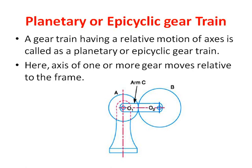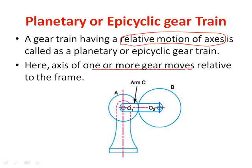The epicyclic gear train is also called a planetary gear train. It is different from a normal gear train because there occurs relative motion of axes, which is not the case in simple, compound, or reverted gear trains. In those gear trains, the axes remain fixed when gears mesh. Whereas in an epicyclic gear train, the axis of one or more gears moves over the axis of another gear — that is why it is called epicyclic or planetary.